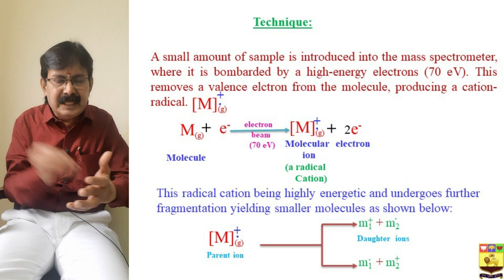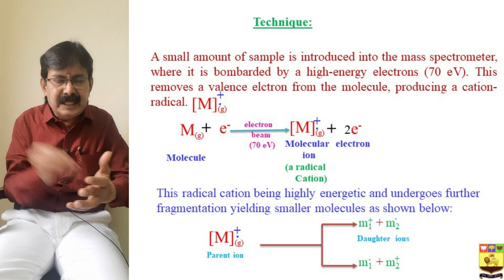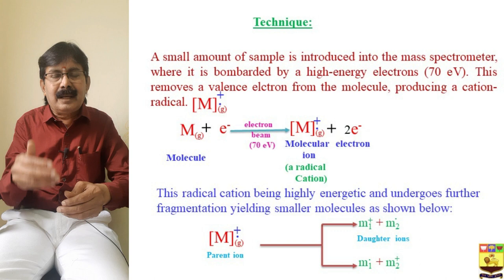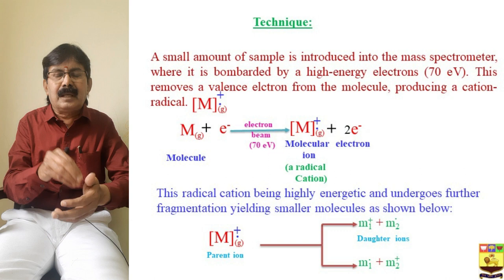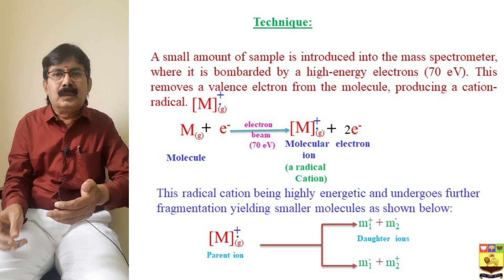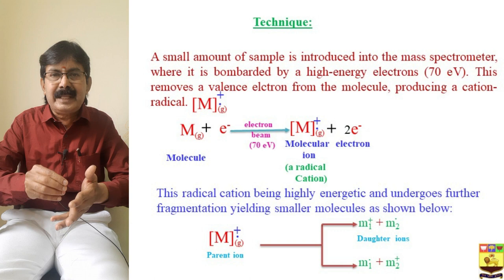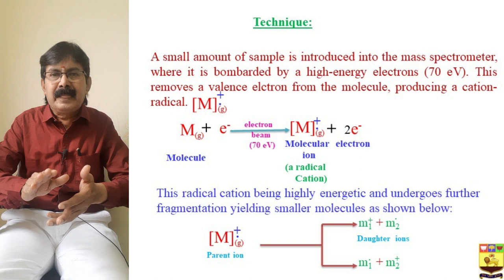This radical cation is highly energetic because the high beam of electrons knocks the molecule, making it highly energetic. Depending upon the stability of the molecular ion, it can travel through the mass analyzer or it can undergo fragmentation to give daughter ions. If we consider the molecule as the parent ion, the daughter ions are m1 and m2. Two types of fragments can form: m1⁺ may be the cation radical, and m2 the neutral radical, or vice versa.